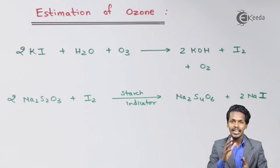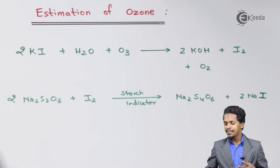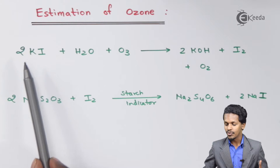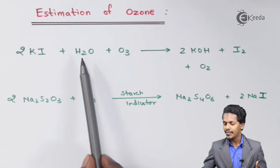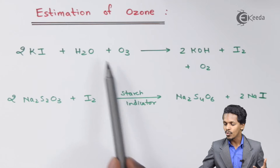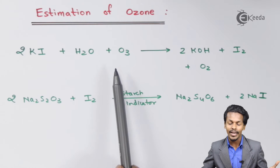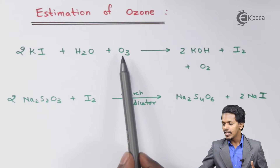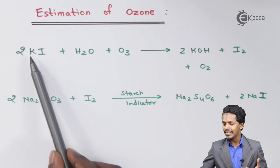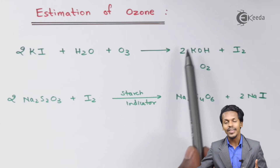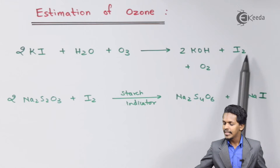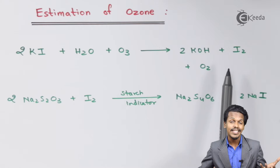Now let me talk about the reaction behind it. We consider a known amount of potassium iodide. So 2 moles of KI is treated with H₂O and an unknown amount of O₃ — this amount of O₃ is what we have to analyze. In this case O₃ acts as an oxidizing agent, and KI turns into 2 moles of KOH along with I₂ and O₂. This I₂ is what we know as iodine.